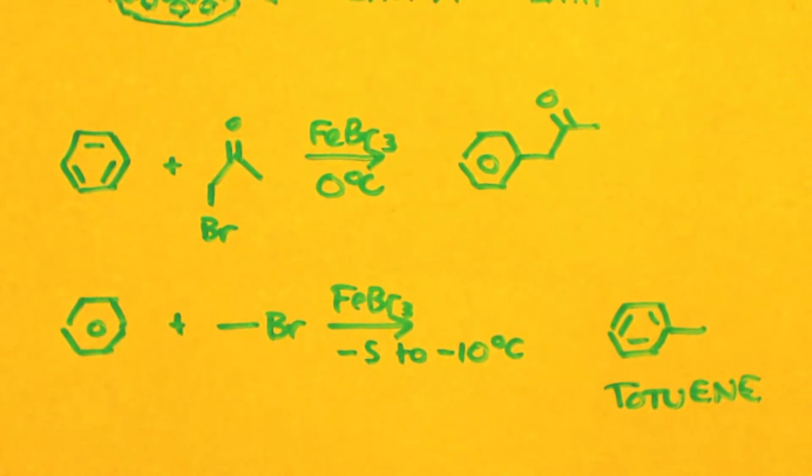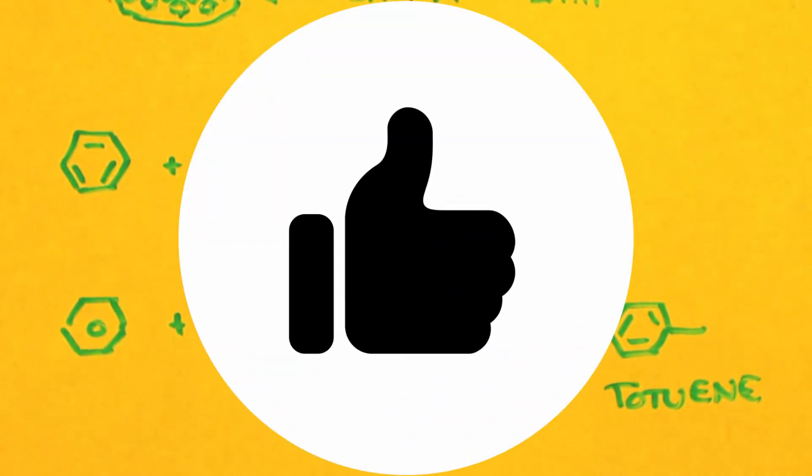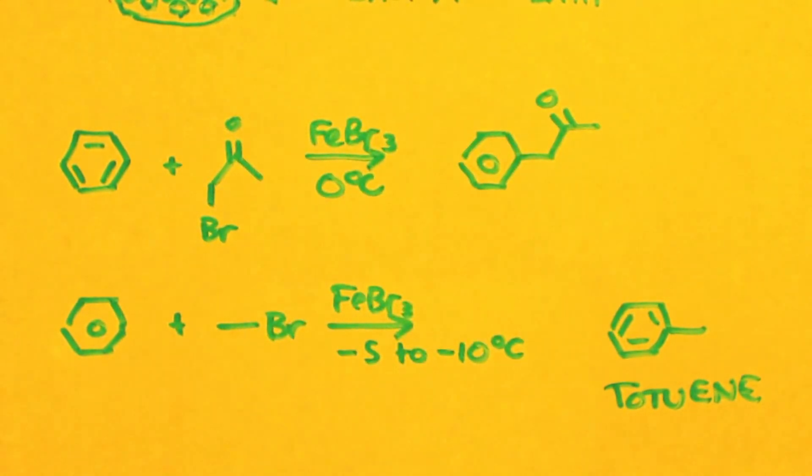Now the top equation is what we've been talking about during this video. The bottom equation is the same reaction, but instead of using bromoacetone, you use methyl bromide. And because methyl bromide has a lower boiling point temperature - it's a gas at room temperature, I think it is - since it has such a low boiling point, you might want to make the reaction be at minus 5 to minus 10 degrees C. I'd have to look up the boiling point. But you probably want it lower than zero degrees Celsius. And you would end up making toluene or methyl benzene.